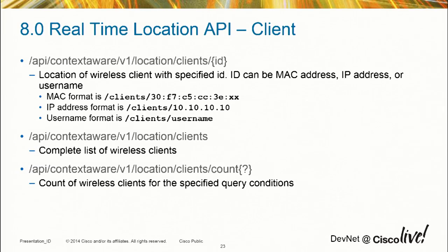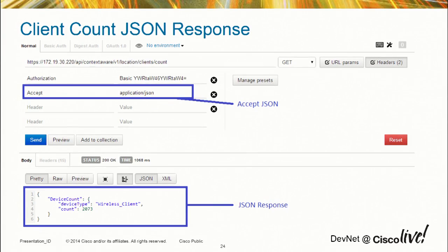Real-time location: this is where I get information about a client. I can get a complete list of everything out there. If I know the MAC address, IP, or username, I can query based on that to limit the results. I can also do a count of the number of clients. The response type is configurable — if I specify application/JSON, it comes back as a JSON object, which I can handle however I want.